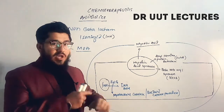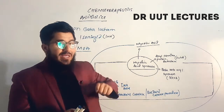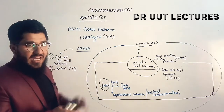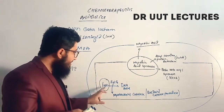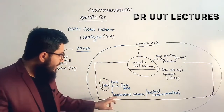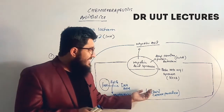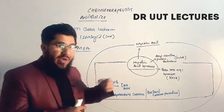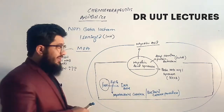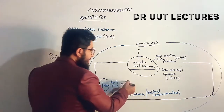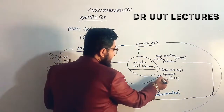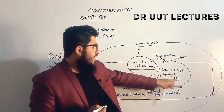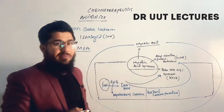To inhibit cell wall synthesis of mycobacterium, we use isoniazid. When isoniazid is administered, it enters the mycobacterium. It is a prodrug, and by means of the katG gene — a mycobacterial catalase enzyme also known as bacterial catalase peroxidase — isoniazid is converted into its active form. This active isoniazid then inhibits beta-ketoacyl synthase (KASA) and acyl carrier protein reductase (INHA).